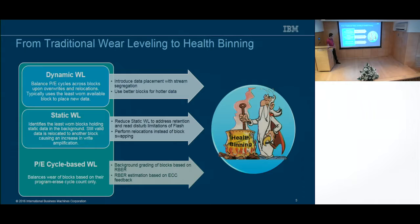Traditional approaches use program-erase cycle-based wear leveling. The biggest change we want to make is to use the raw bit error rate of the worst page in each block. We have to build a distribution of these raw bit error rates, which means we need access to the information the ECC decoder delivers — telling us how many errors occurred when we read the page.